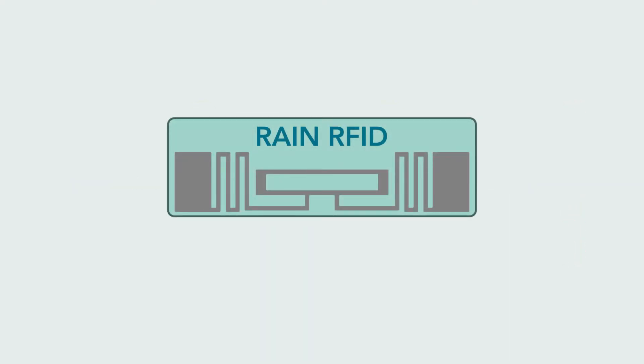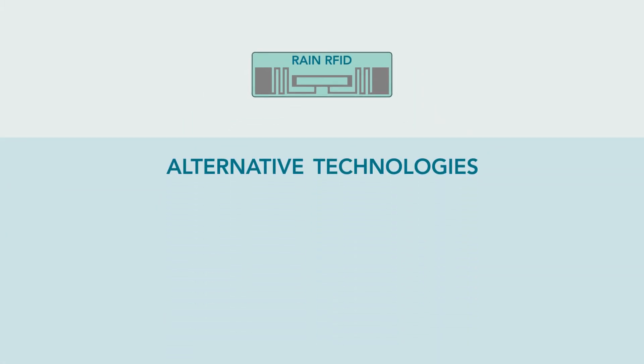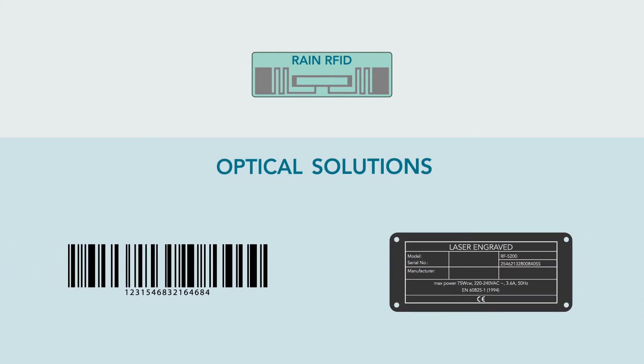RAIN RFID has many advantages compared to alternative technologies, which are mainly optical solutions like barcodes and laser engravings.